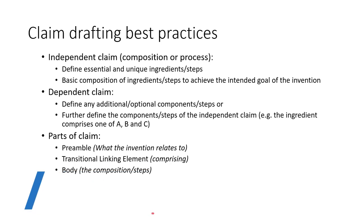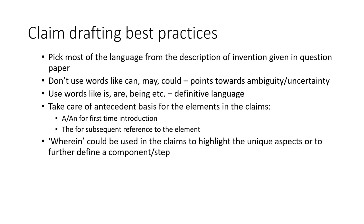The most important part of the claim is the preamble, which defines what the invention relates to — whether the invention is a composition or a process, and for what purpose that composition or process is being used. Then there is a transitional linking element; as a basic rule you use 'comprising.' Then comes the body, wherein you define the composition or unique steps which you are defining as the unique aspect of your invention. Some tips to solve the question paper: pick most of the language from the description of the invention given in the question paper.